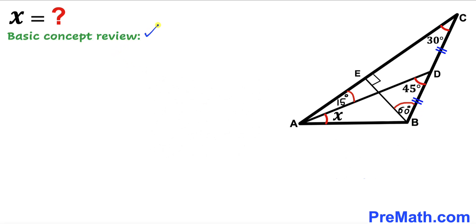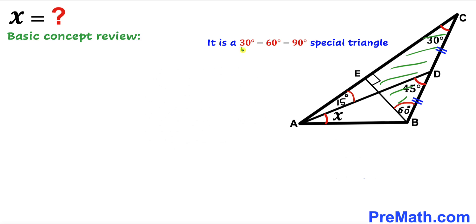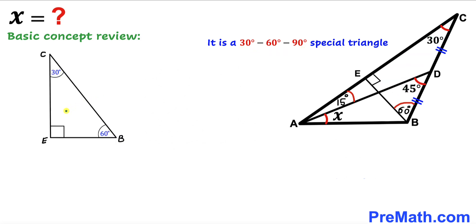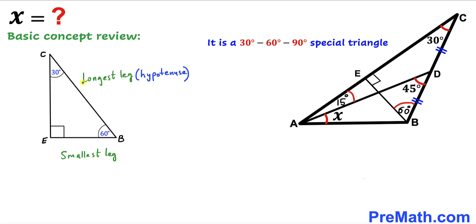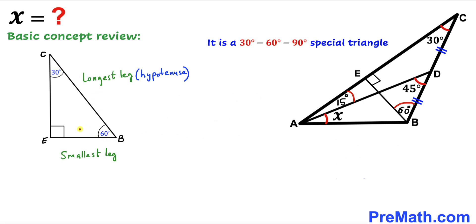Before we proceed, let's do a quick review. Triangle BEC is a special 30-60-90 triangle. In a 30-60-90 triangle, 30 degrees is the smallest angle and 90 degrees is the largest angle. The hypotenuse is the longest side. The longest leg is twice the smallest leg — if the smallest leg is 1 unit, the hypotenuse is 2 units, and the remaining leg is square root of 3.